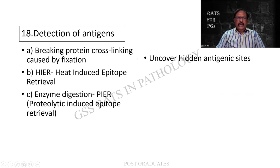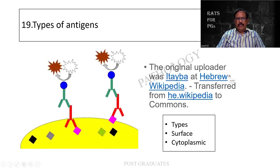How do you detect the antigens? What is the principle behind it? It is breaking protein cross-linking caused by fixation. The first method is heat-induced epitope retrieval. The second is enzyme digestion - proteolytic-induced epitope retrieval. These are the methods used for retrieving the antigens and then trying to identify them - the methods for uncovering the hidden antigenic sites. These types of antigens can be surface, cytoplasmic, or organellar.